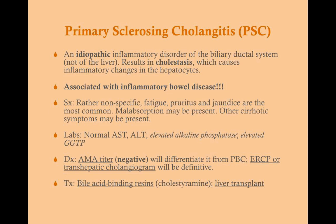The definitive way to diagnose primary sclerosing cholangitis is to directly visualize the bile ducts via ERCP — inserting an endoscope through the mouth into the duodenum and up through the ampulla — or a transhepatic cholangiogram. Once PSC is diagnosed, treatment is bile acid binding resins, which reduce reabsorption of bile, alleviating pruritus and jaundice. Liver transplant is the only cure for PSC, though in most cases the PSC will recur even after transplant.